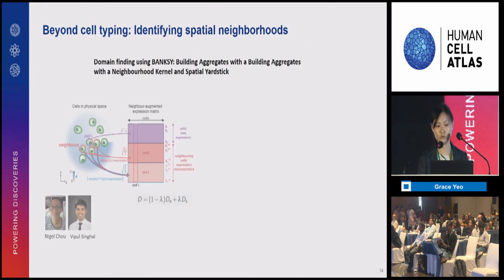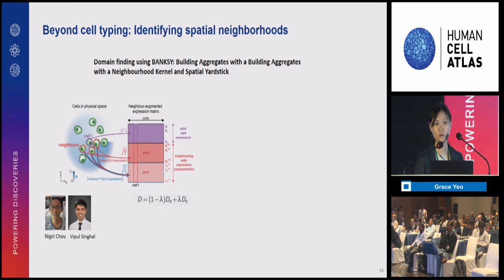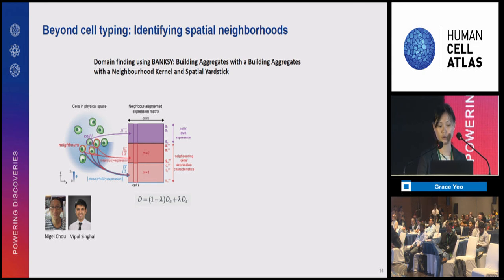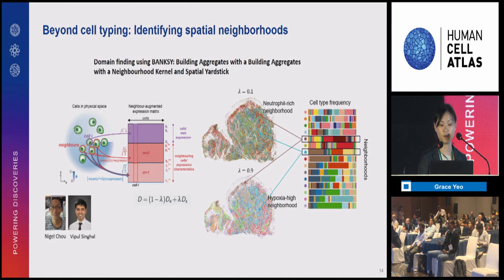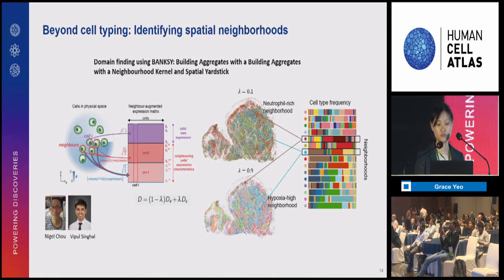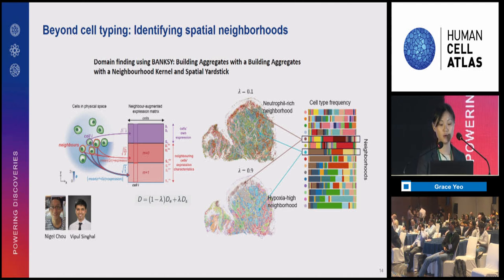One way is through domain finding using Banksy. The idea is that when clustering, we consider not only the expression of an individual cell but also the expression of its neighborhood, with a tuning parameter lambda that controls how much attention we pay to our own expression versus neighboring expression. When lambda is low, we identify cell types; when lambda is high, we see cell types coalescing into biologically coherent spatial neighborhoods — for example, a neutrophil-rich region containing neutrophils and cancer-associated fibroblasts expressing cytokines and upregulating NF-κB signaling, and hypoxia-high neighborhoods mostly enriched for mature enterocytes.